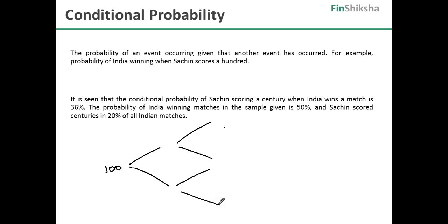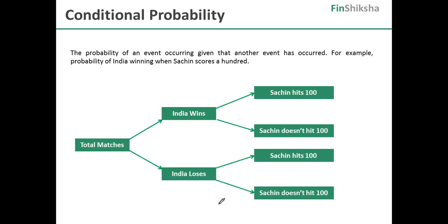So what would come in would look something like this. We have the total number of matches, India winning or losing, then Sachin hitting 100 or not hitting 100 for each outcome. So there are four possible outcomes: Sachin hits 100 and India wins; Sachin doesn't hit 100 and India wins; Sachin hits 100 and India loses; and Sachin doesn't hit 100 and India loses.